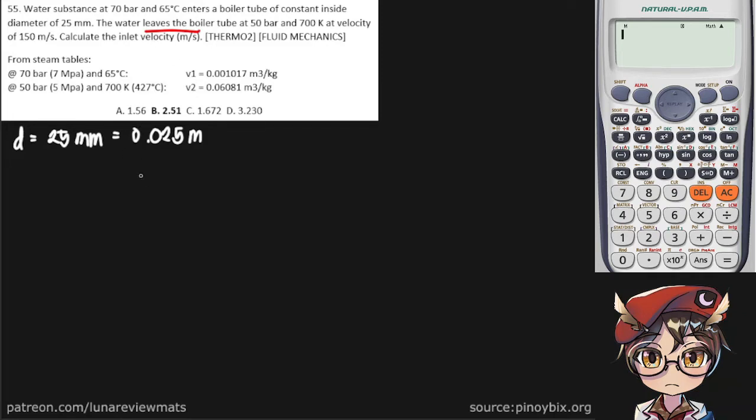The fact that something is leaving something means it's easier to visualize the problem by drawing it. So, something is leaving the boiler, water, at an exit velocity of 150 meters per second. Let's call the exit state 2, and we're trying to find the inlet velocity in meters per second, and let's call this state 1.